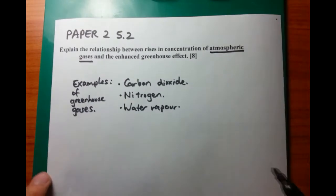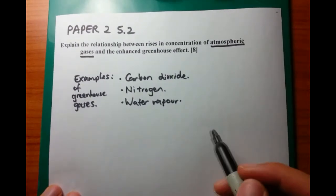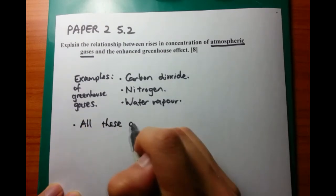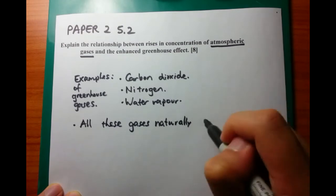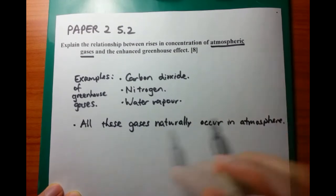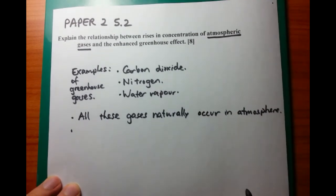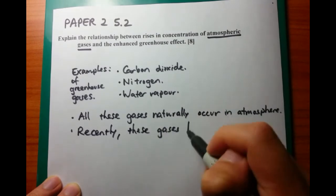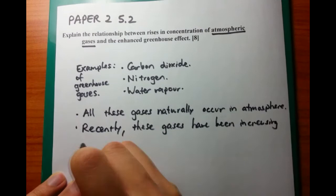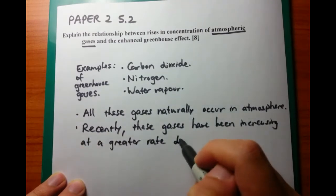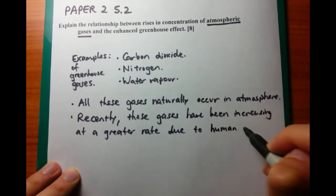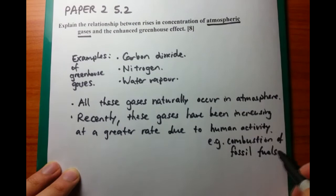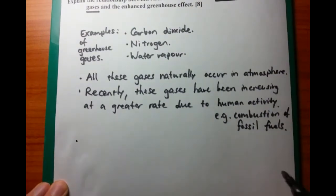We need to talk about these gases and where they're found. They're found naturally within the atmosphere — they occur naturally. But the interesting case about the greenhouse effect is that these gases have been increasing at an increasing rate due to human activity. That's mainly due to the combustion of oils, fossil fuels, coals, etc. Remember that you can give examples of human activity as well.